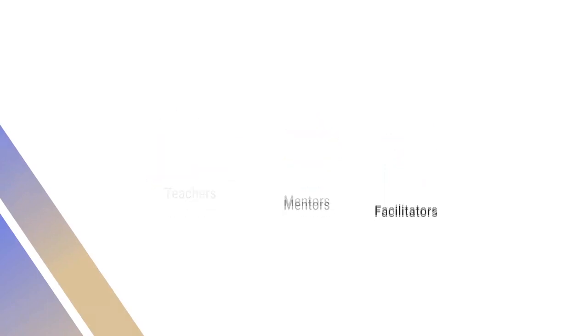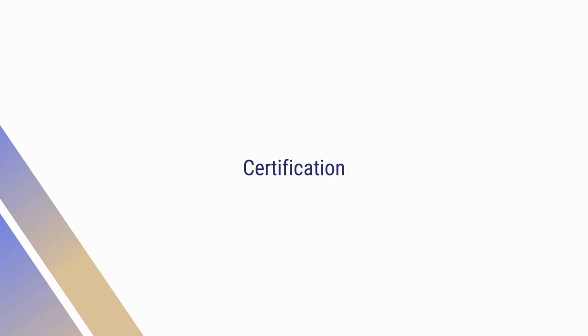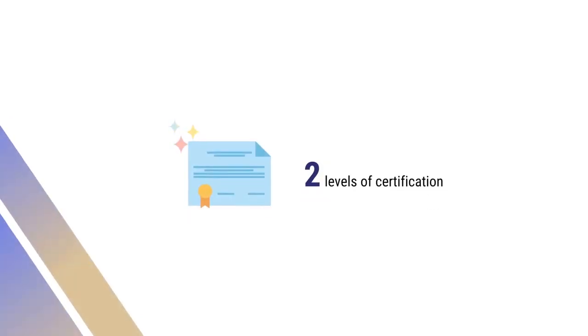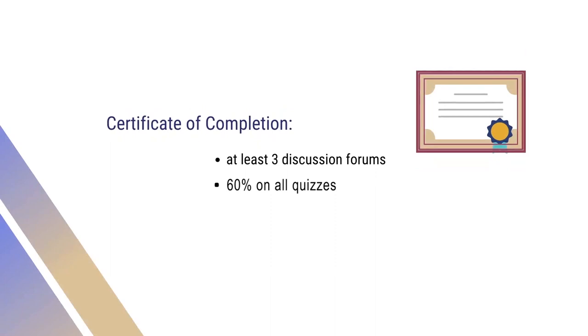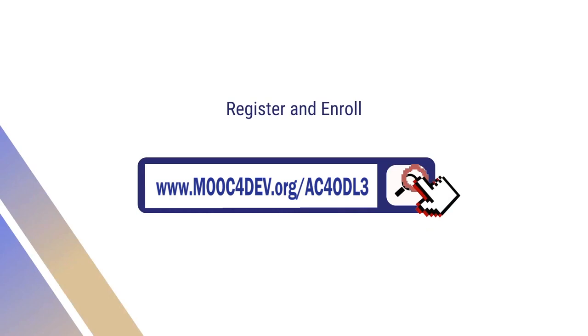At the successful completion or participation of the MOOC, you will earn a certificate. There are two levels of certification available based on your level of participation and completion of tasks and activities. Certificate of Participation requires participation in at least three discussion forums and completion of quizzes with 50%. Certificate of Completion requires 70% on all quizzes and participation in at least three discussions. To register and enroll in this MOOC, please go to the link provided on the screen.